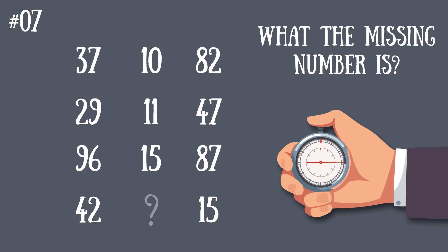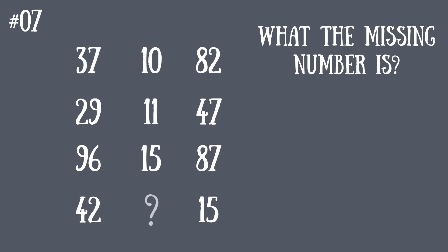Ready or not, here's an answer. The missing number is 6. The number in the middle of each line is the same as the digits of either end's number added together. So for the first line, 3 plus 7 gives us 10, and 8 plus 2 equals 10 as well. That's why 10 is in the middle.